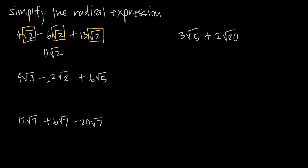In the next problem, we have 4 times root 3, minus 2 times root 2, plus 6 square root of 5. In this case we have a square root of 3, a square root of 2, and a square root of 5 — these are all different numbers, so they're not like terms. We can't combine these at all. This radical expression is already simplified as much as it can be.